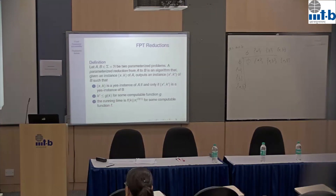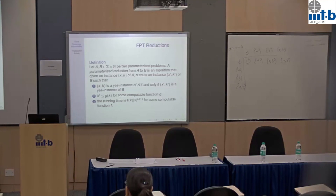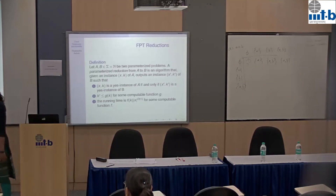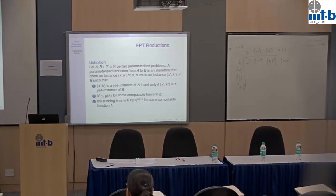By this definition, if B is in FPT and there exists a parameterized reduction from A to B, then A is also in FPT — you reduce A to B in FPT time and solve B in FPT time. Similarly, if A is known to be W-hard and there is an FPT reduction from A to B, then B also has to be W-hard. So to prove a problem is W-hard, you need a parameterized reduction from a known W-hard problem to that problem.